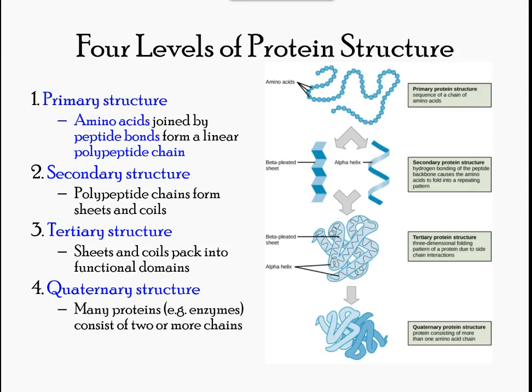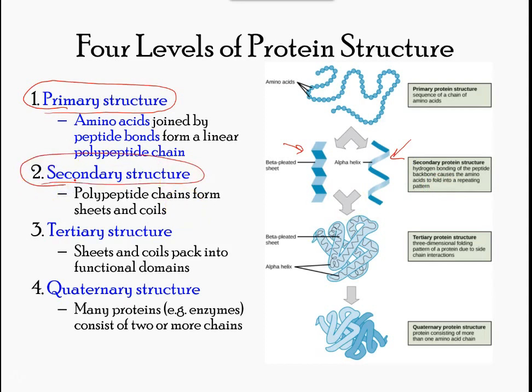To understand how a protein gets its final shape or conformation, we need to understand the four levels of protein structure: primary, secondary, tertiary, and quaternary. The unique sequence and number of amino acids in a polypeptide chain is its primary structure. Folding patterns resulting from interactions between the non-R group portions of amino acids give rise to the secondary structure, with examples being the beta-pleated sheet and alpha-helix.